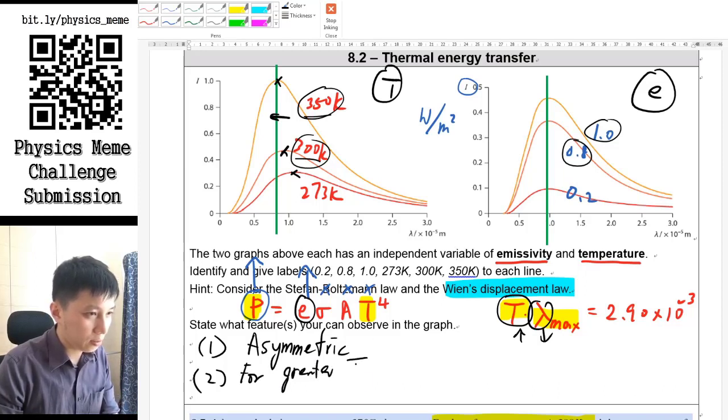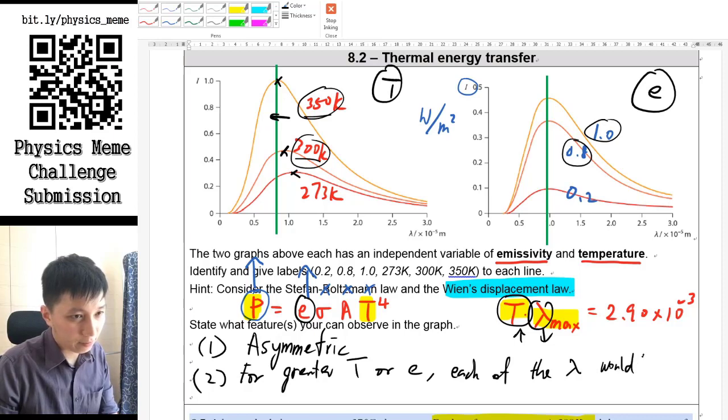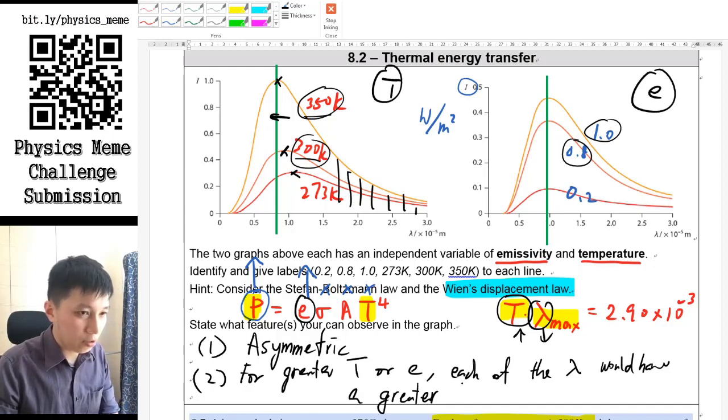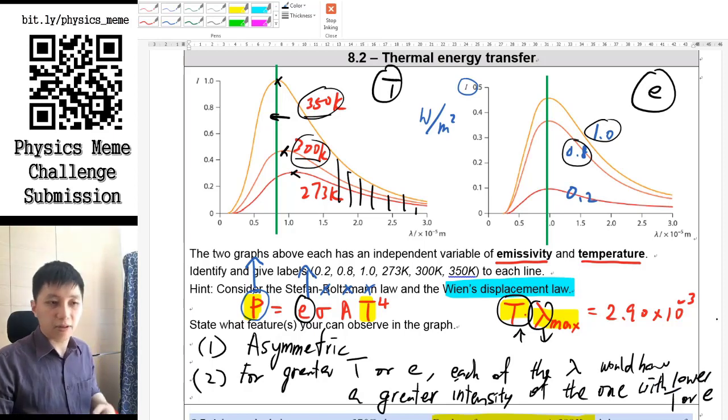What you can say about this could be: for greater temperature or emissivity, each of the wavelengths would have a greater intensity. The orange one is always greater than the red one, greater intensity than the one with lower temperature or emissivity.